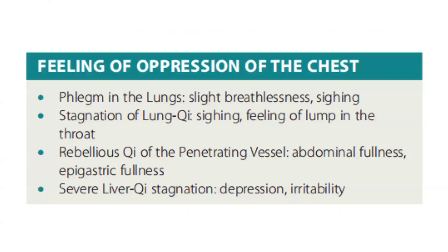To summarize: for phlegm in the lungs, the accompanying symptoms would be slight breathlessness and sighing. For lung chi stagnation, aside from the feeling of oppression of the chest, there would be sighing and a feeling of a lump in the throat. For rebellious chi of the penetrating vessel, you need abdominal fullness and epigastric fullness. For severe liver chi stagnation, there will be depression and irritability.